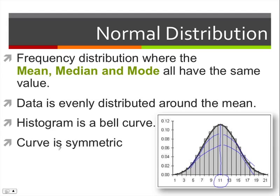The curve is symmetric, meaning the left side and the right side are mirror images of each other. Here is an example of a normal distribution. Now they can be all shapes and sizes — they can be lower like this, they can be even taller like this — but these are a couple of their characteristics.